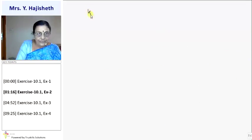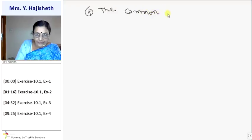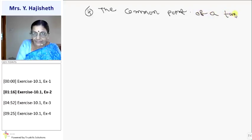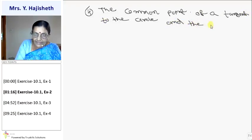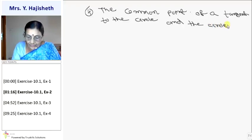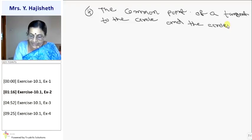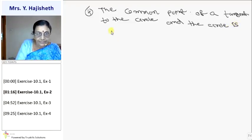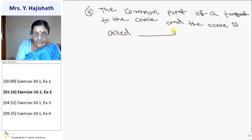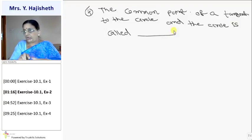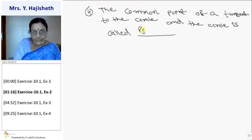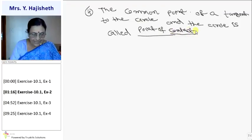The fourth fill in the blank is: the common point of a tangent to a circle and the circle is called dash. The common point of a tangent to the circle and the circle is called the point of contact. So these are the four blanks in question number 2.